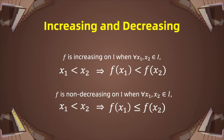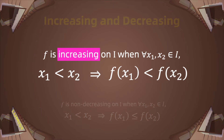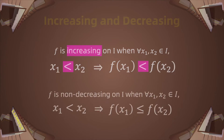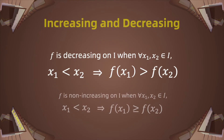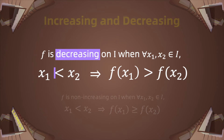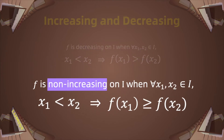Monotonicity means increasing or decreasing of a function. Let f be a function defined on the interval i. f is increasing on i when for all x1 and x2 belonging to i, x1 is less than x2 and f(x1) is less than f(x2). f is non-decreasing on i when x1 is less than x2 and f(x1) is less than or equal to f(x2). f is decreasing on i when x1 is less than x2 and f(x1) is greater than f(x2), and f is non-increasing on i when x1 is less than x2 and f(x1) is greater than or equal to f(x2).